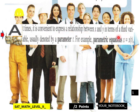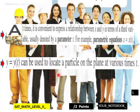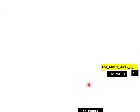Usually denoted by a parameter T. For example, parametric equations X equals X of T or Y equals Y of T can be used to locate a particle on the plane at various times T. So T for time.